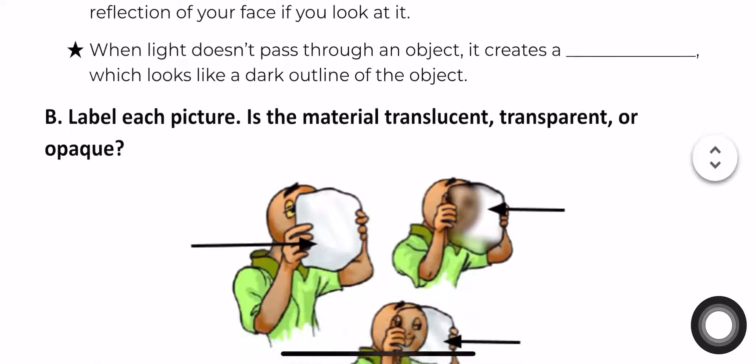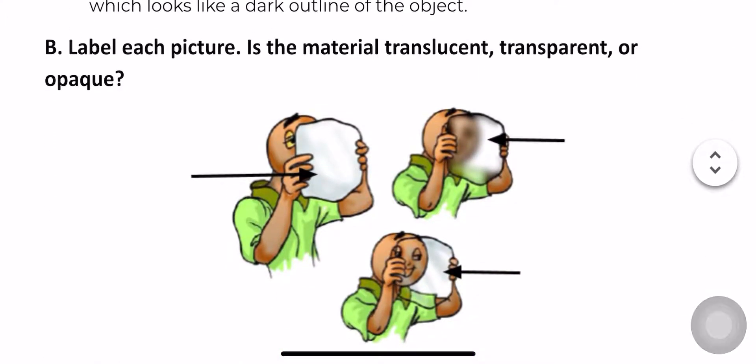Let's go to the next. Label each picture. Is the material translucent, transparent, or opaque? So you're going to put if this is transparent, translucent, or opaque. You're going to copy this. Which one is transparent? Which one is translucent? And which one is opaque? You can pause the video and answer it first.